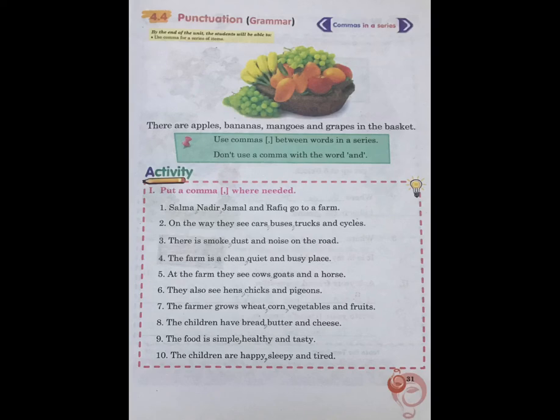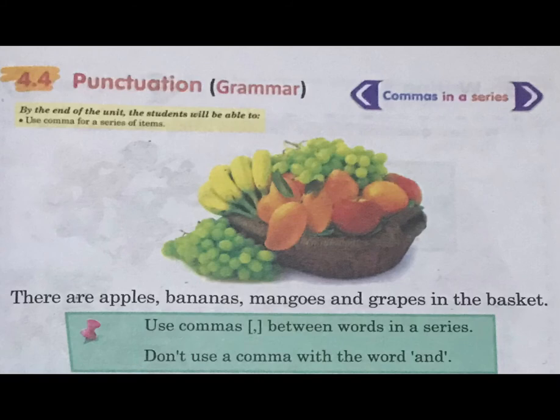Section 4.4 Punctuation Grammar. There are apples, bananas, mangoes and grapes in the basket. Use a comma between the words in a series. Don't use a comma with the word 'and'.